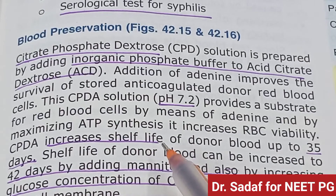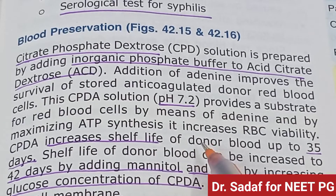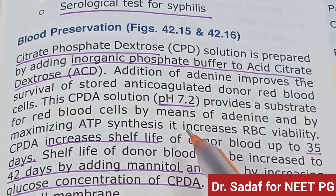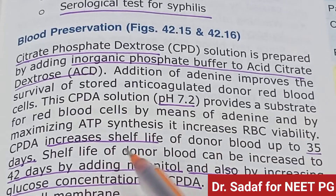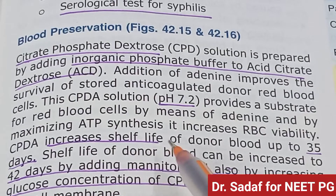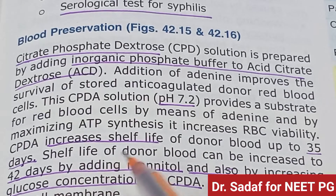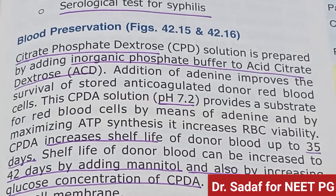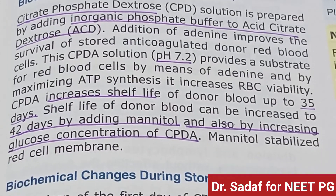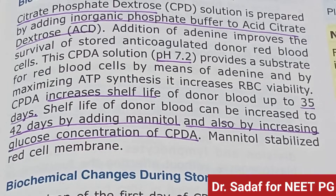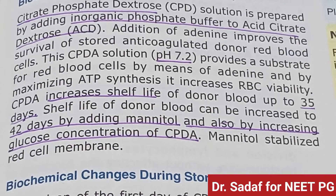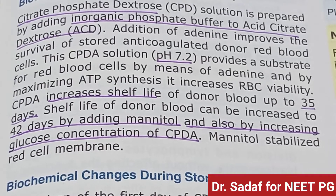CPD anticoagulant increases the shelf life of donor blood up to 35 days. The shelf life can be extended to 42 days by adding mannitol and by increasing the glucose concentration of CPD. Mannitol stabilizes the red cell membrane.